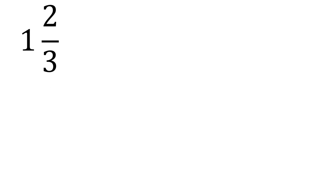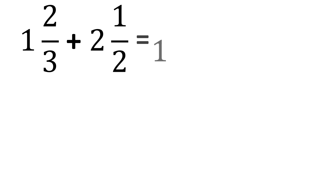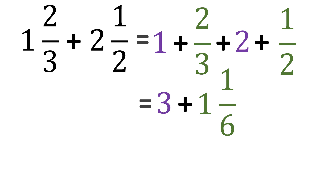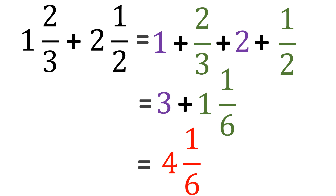For mixed forms, we also use a shortcut. For 1 and 2 thirds plus 2 and 1 half: separate the whole number from the fraction — 1 plus 2 thirds plus 2 plus 1 half. Combine the whole numbers: 1 plus 2 is 3. Then combine the fractions — 2 thirds plus 1 half — which from the previous example equals 1 and 1 sixth. Then combine 3 and 1 and 1 sixth: add the whole numbers (3 plus 1 is 4) and copy 1 sixth. The answer is 4 and 1 sixth.